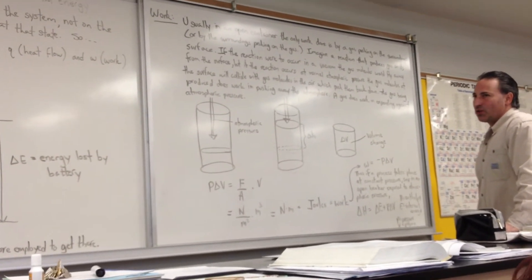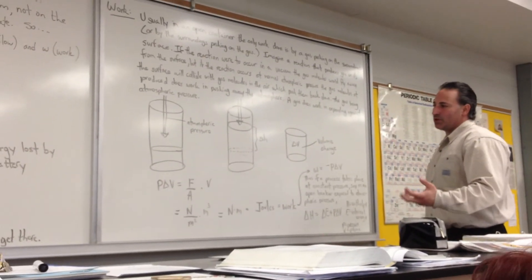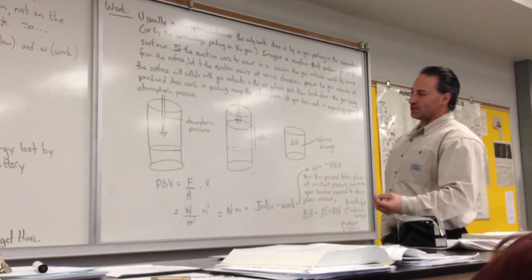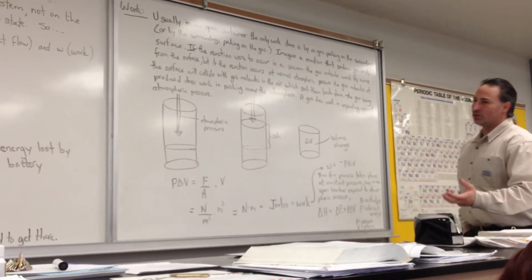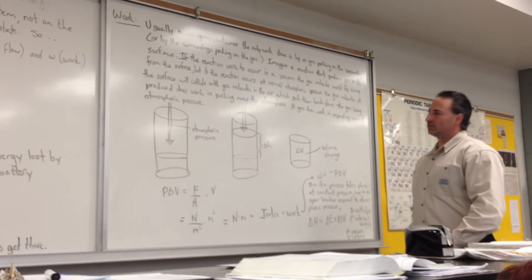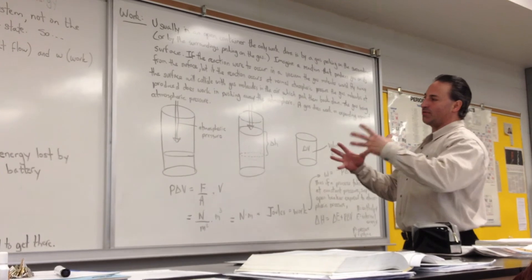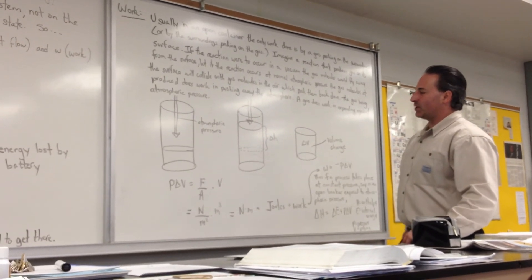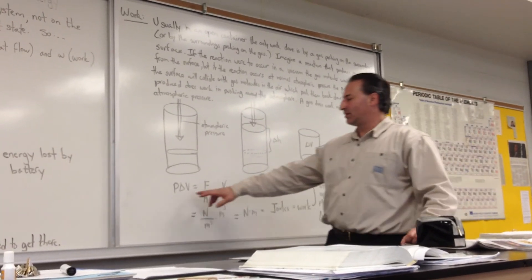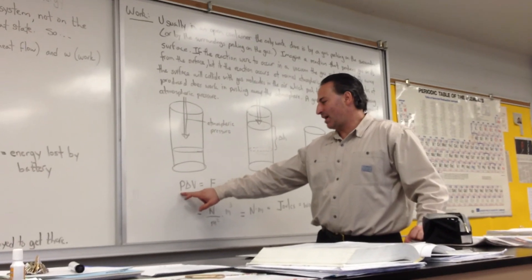If the reaction occurs in normal atmospheric pressure, when the gas is being produced, it collides with the air molecules as it's coming out of the reaction surface. So it has to do work to escape from the reaction surface, to expand away from the surface. And this is where we get the term P delta V, P being the pressure of the atmosphere.